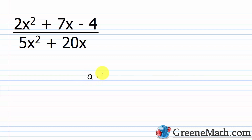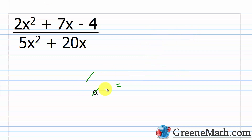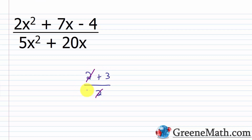If you have something like A multiplied by B over A, then A and B in the numerator are factors — they're multiplying each other — so A can cancel with A, leaving just B. For example, 2 times 3 over 2: the 2s cancel, leaving 3. Where students get confused is when addition is involved. If you see something like (2 + 3) over 2, you cannot cancel the 2. That's wrong — you cancel common factors only.